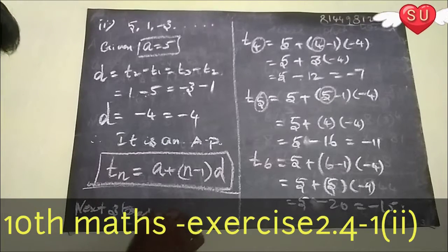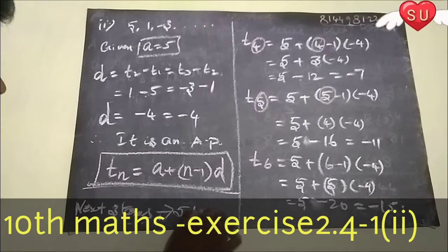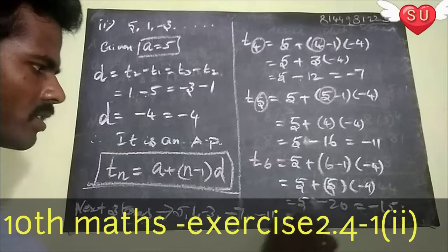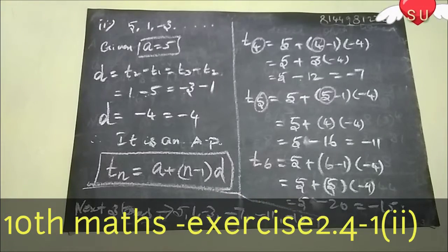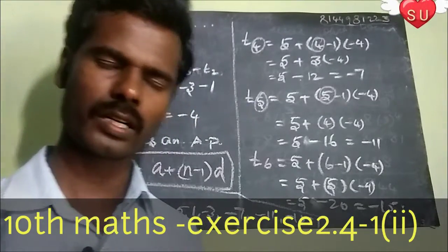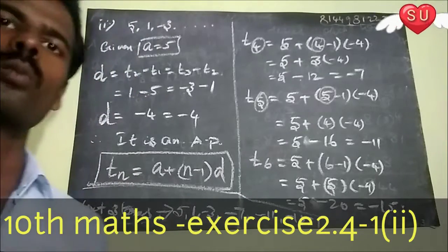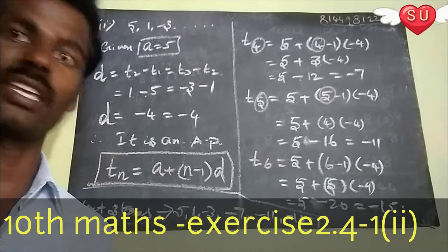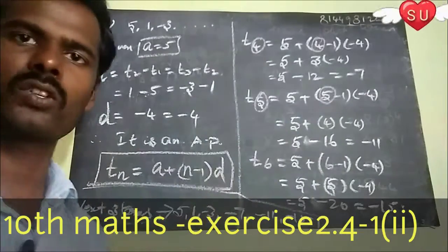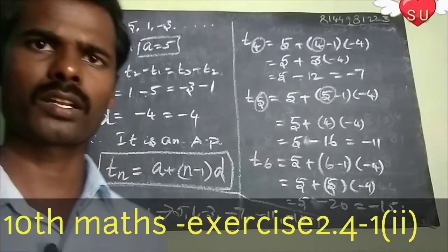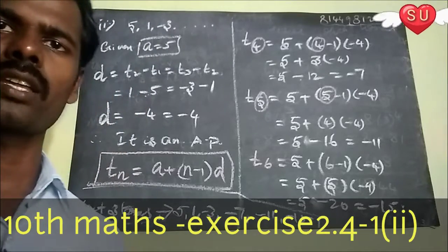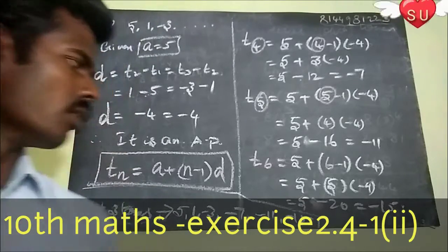So, the sequence is 5, minus 3, minus 3... next is minus 7, then minus 11, and minus 15. If you want to understand faster, stop and rewind. If this video is going too fast, you can stop and check, or you can watch it over 2 minutes. Ok friends, thank you.